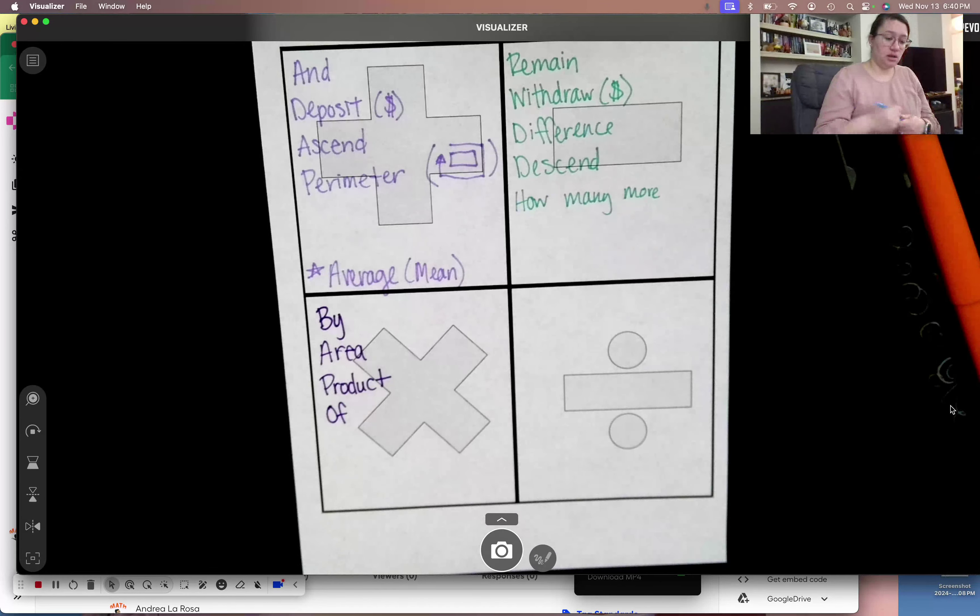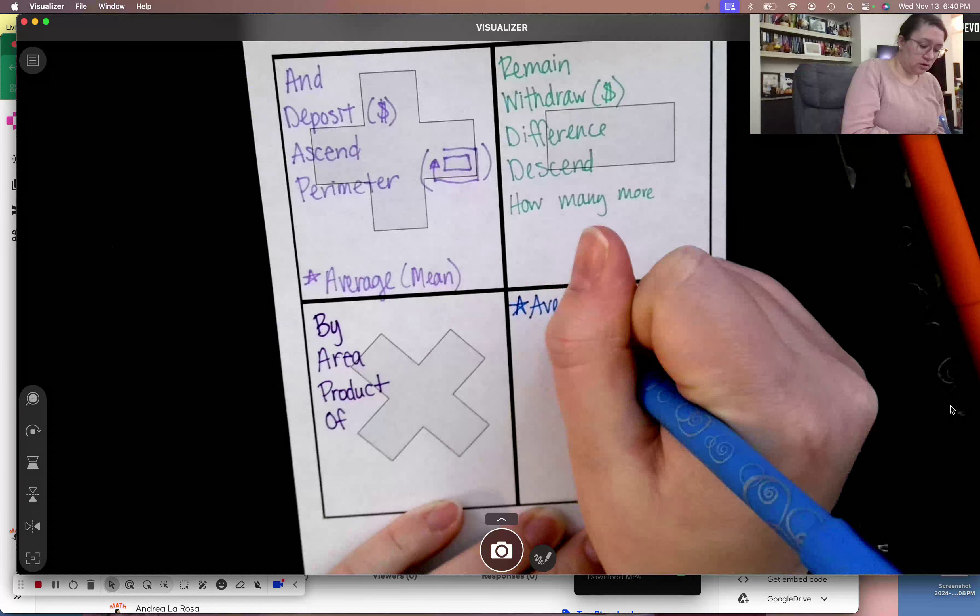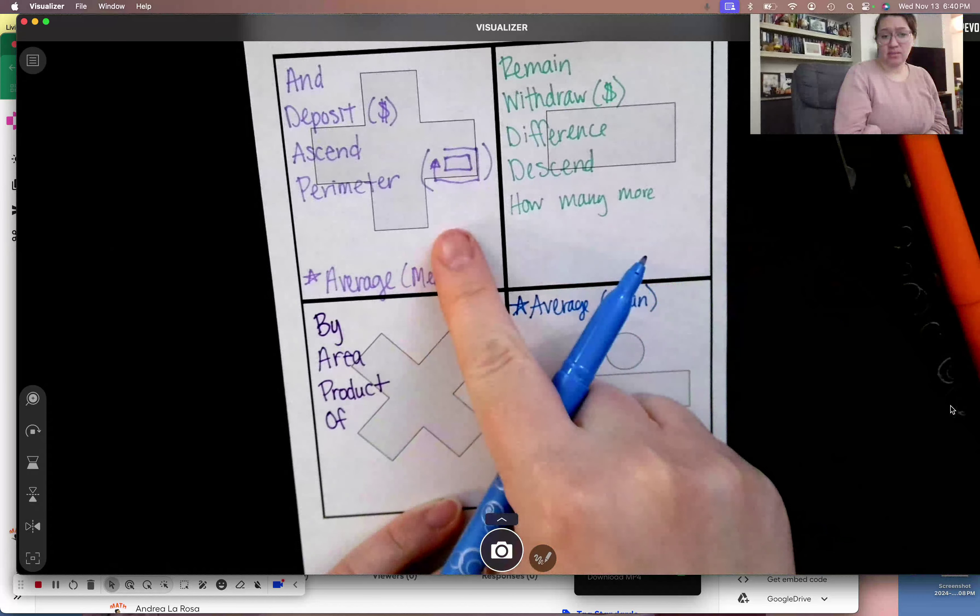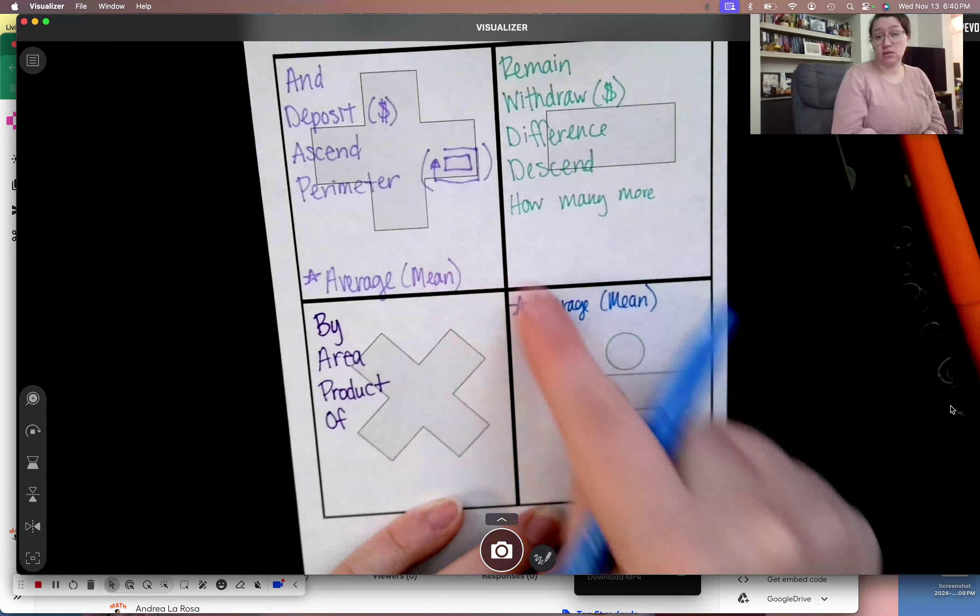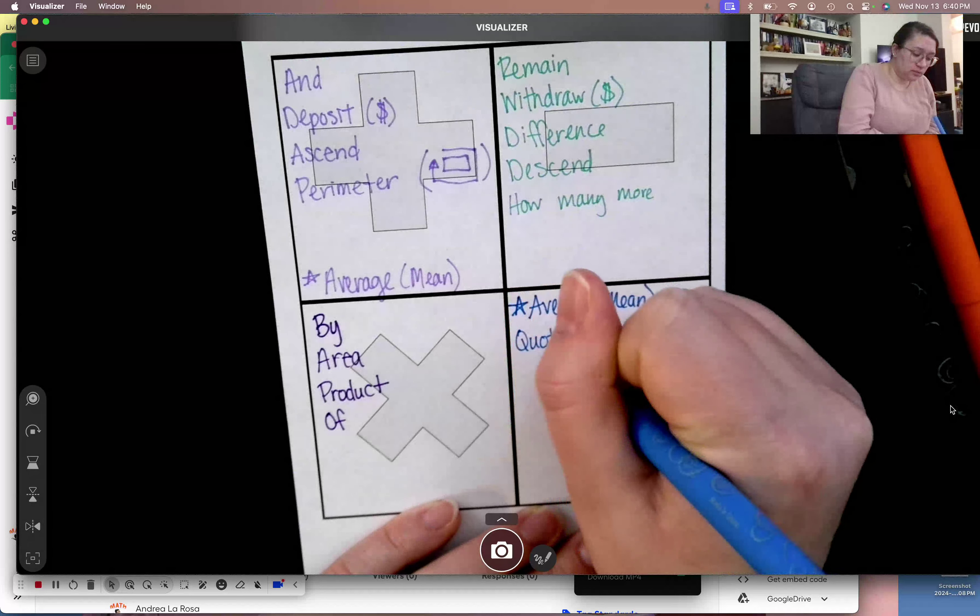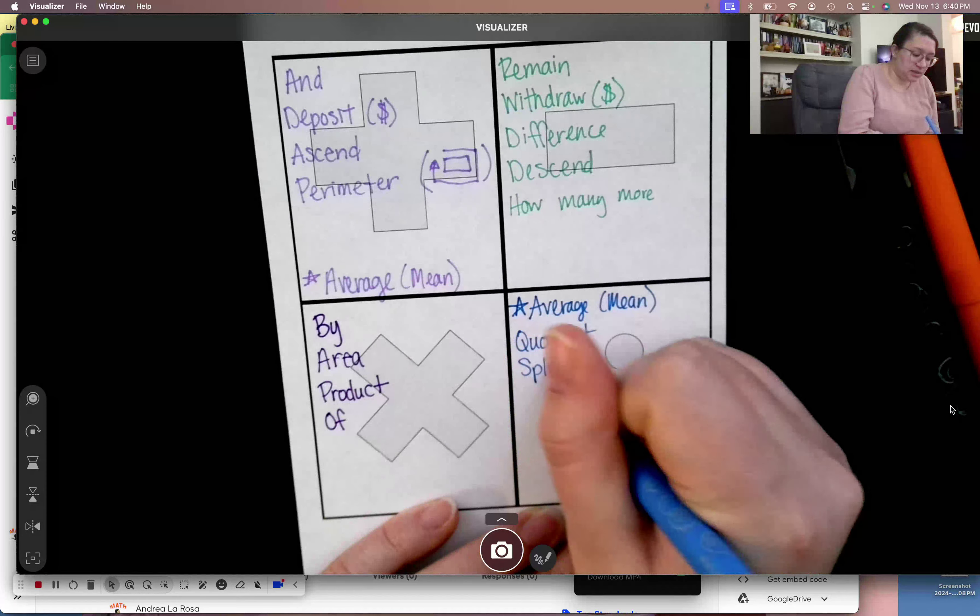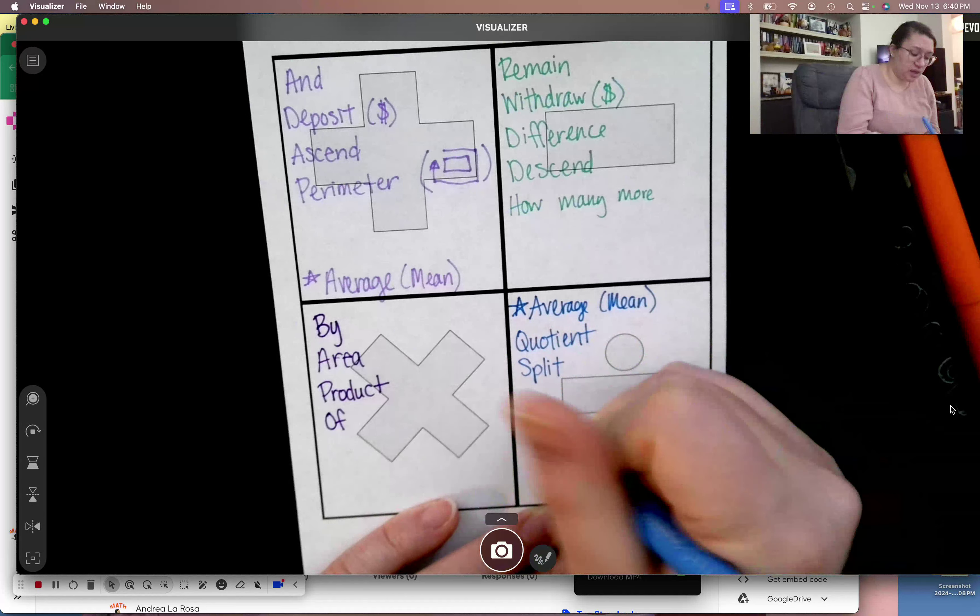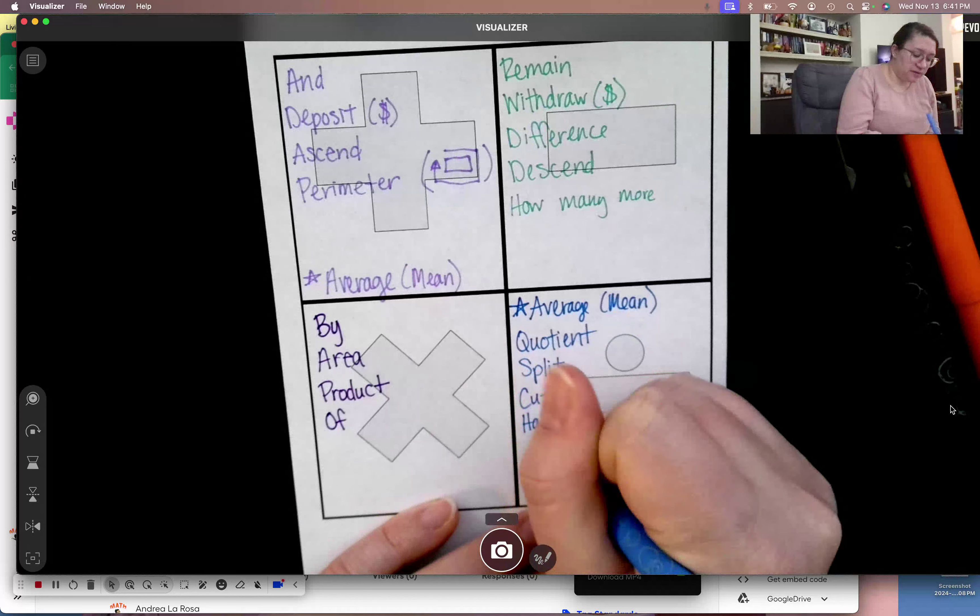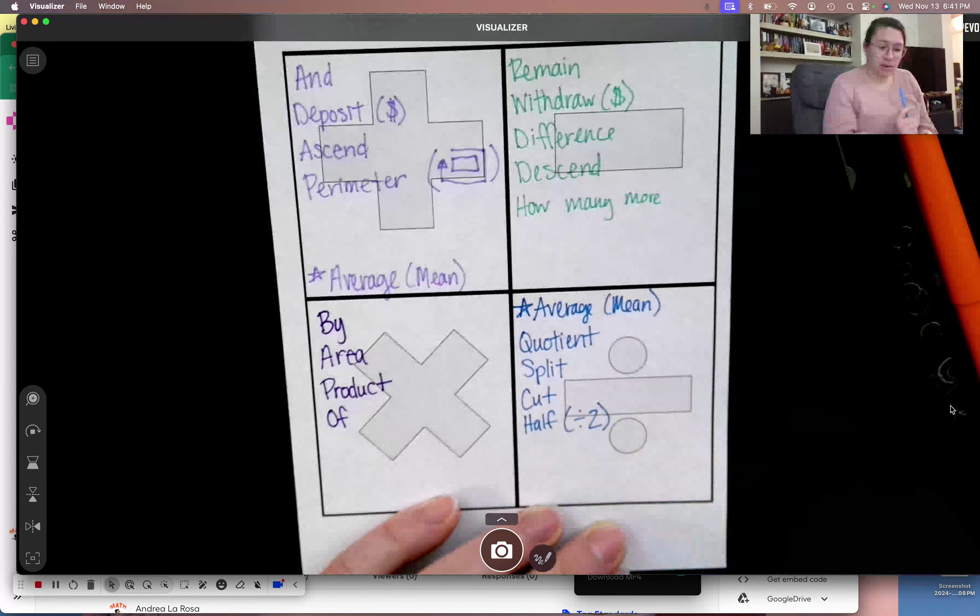Next, division words. I would also put an average here. Because like I said, we add them all up and then divide by how many there are. So two operations are happening with an average. But the word quotient, the answer to a division problem. If I split something evenly, if I cut something to pieces, if I do half of something, it means I'm dividing by what number? Two. Half means we divide by two.